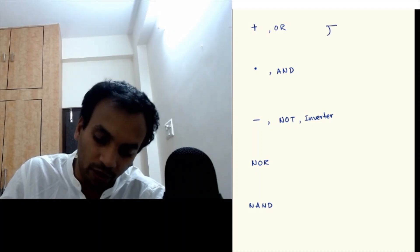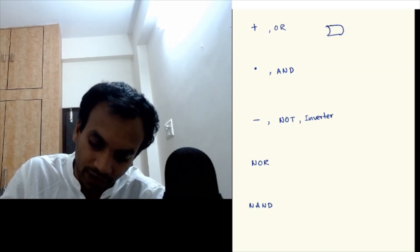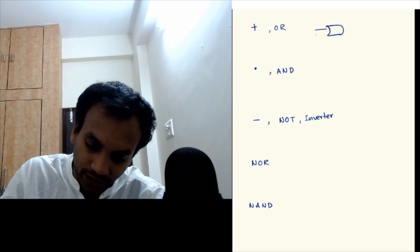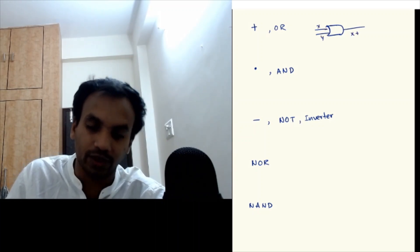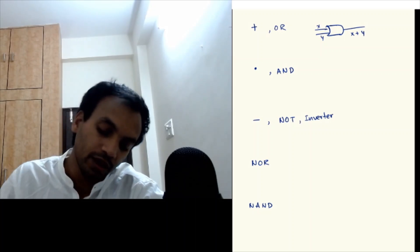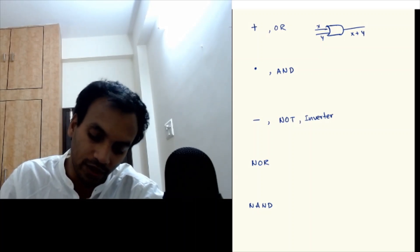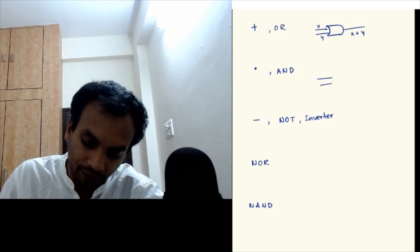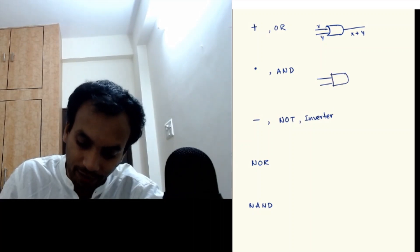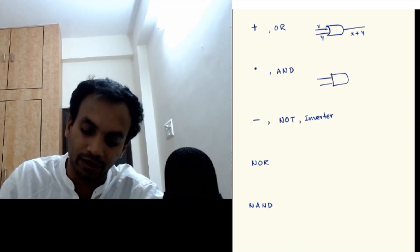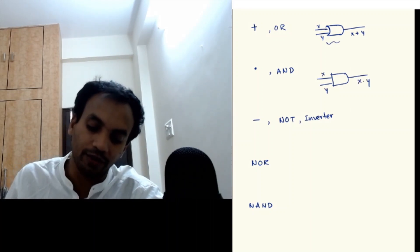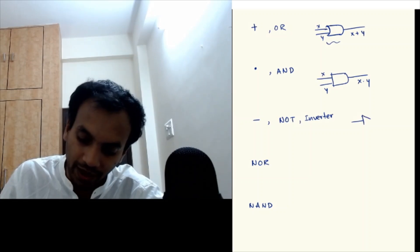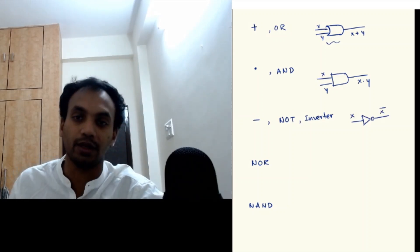OR is represented by a curved symbol with two inputs X and Y, and the output is X plus Y — that is, X OR Y. AND is very similar except it has a flat base instead of a curvy base, with inputs X and Y and output X times Y. The inverter is represented by a triangle with a circle, where the input is X and the output is X bar.